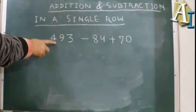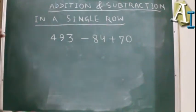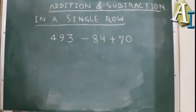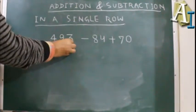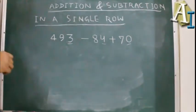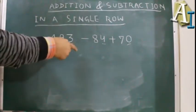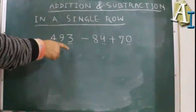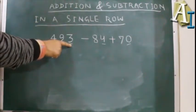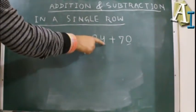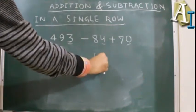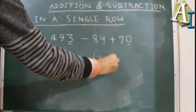We have 493 minus 84 plus 70. What we have to do is first pick the unit numbers and add them. So we will add the unit numbers: 3 minus 4.